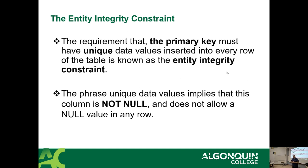Entity integrity constraint is the requirement that a primary key must be unique. We already talked about how primary keys must be unique. The entity integrity constraint means the primary key must be unique and there cannot be a completely null row — a row cannot be empty. It would be like saying 'I'm going to create a student but the student does not exist' — there's nothing to define the student.